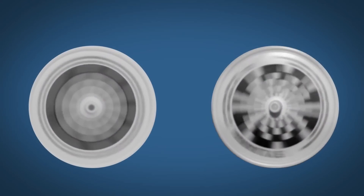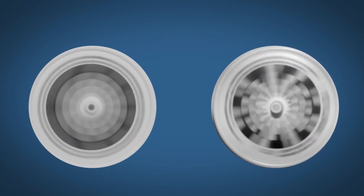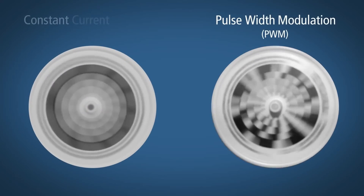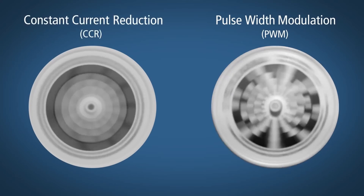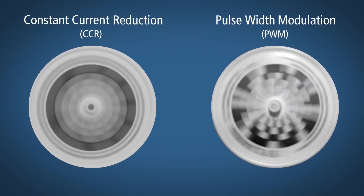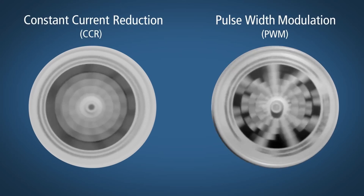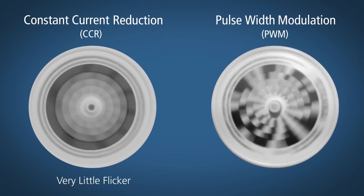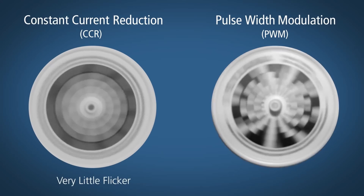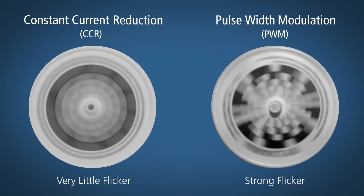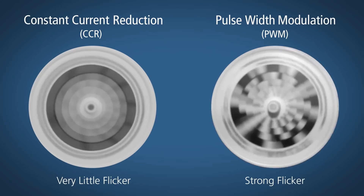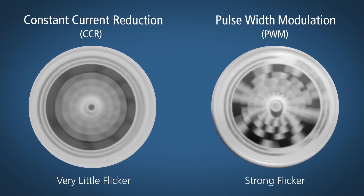Let's take a look at the patterns that emerge from an LED light source driven by a dimmed PWM LED supply and a dimmed CCR LED power supply. The wheel on the left, driven by a CCR power supply, tends to show constant concentric circles — a sign of a luminaire that has little flicker. The spinning wheel on the right has clearly chopped-up segments: you're seeing the strobe effect, which is perceived as flicker.